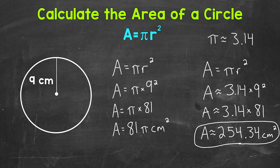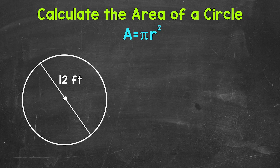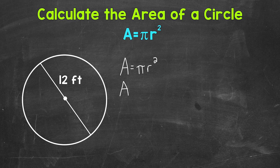So that gave us an approximate area in decimal form, compared to the area written in terms of pi. That's how we calculate the area of a circle given the radius. Now let's move on to finding the area given the diameter. For this example, we have a circle with a diameter of 12 feet. First, write out the formula: area equals pi r squared. Since we're given the diameter, we divide by 2 to get the radius — 12 divided by 2 gives us a radius of 6 feet.